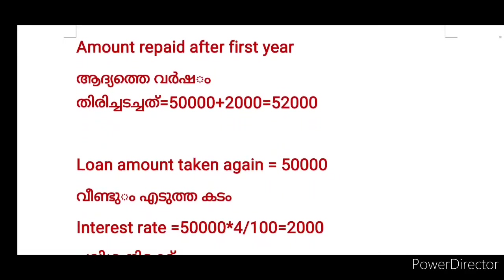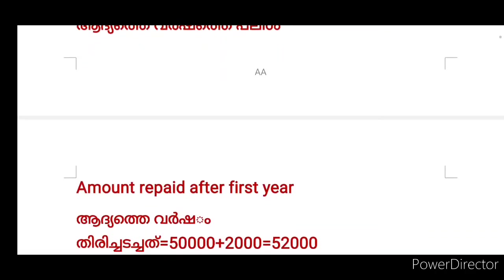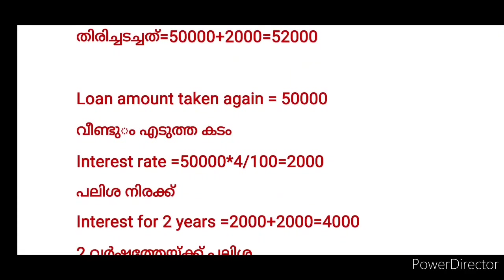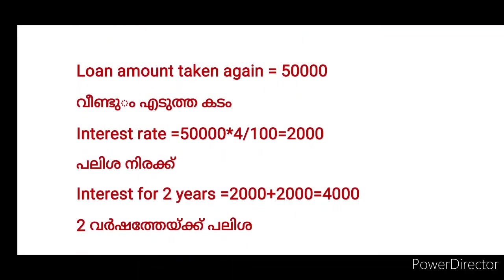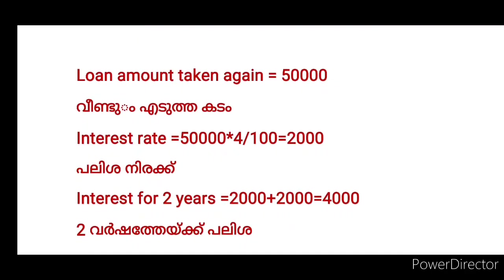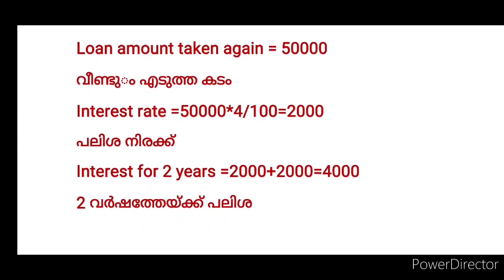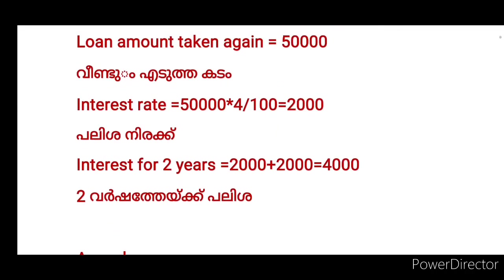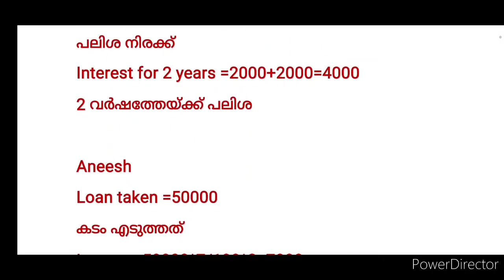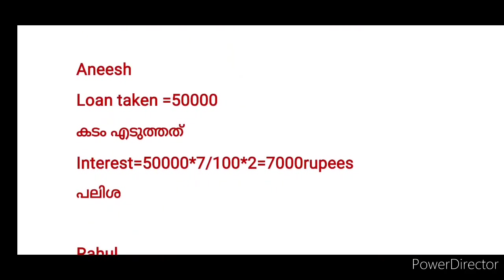In the second year you get more than 50,000. If you get more than 50,000, then you get more than 50,000. Then you get more than 200,000 interest. For 2 years, you get 2 more than 200,000 interest. Anish is 50,000 rupees. Interest is 50,000 × 7 ÷ 100 × 2.